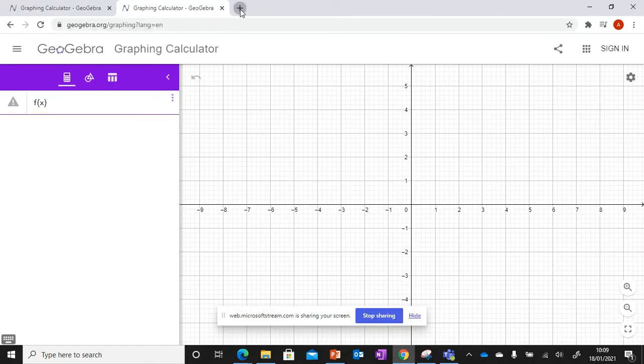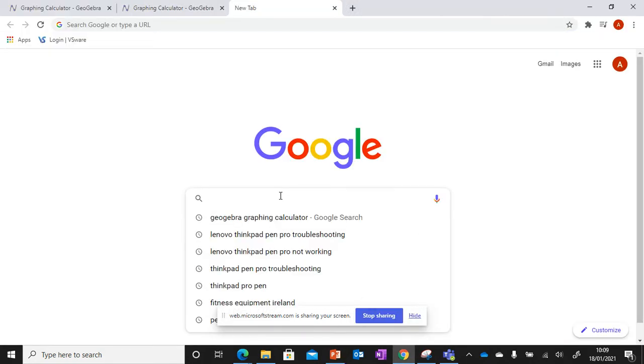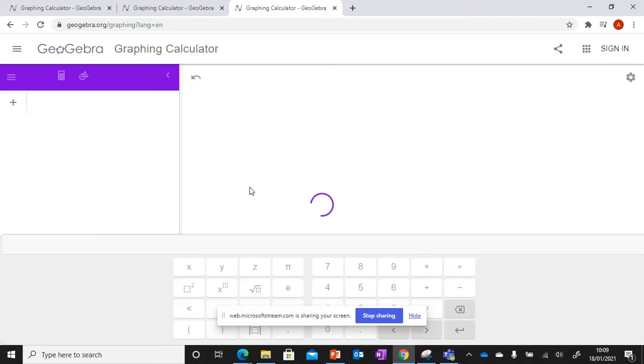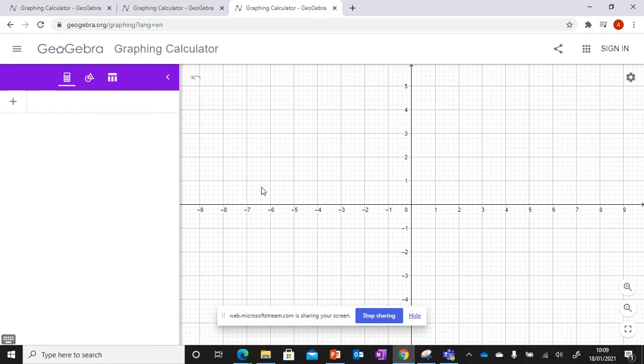So we'll go to Google and just type in GeoGebra Graphic Calculator. Go on to your first result and this brings you straight into it, the online version. So it's very easy to use.